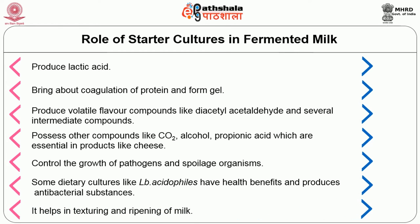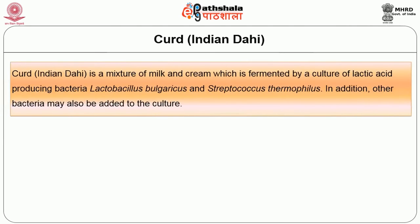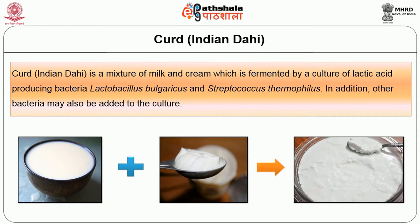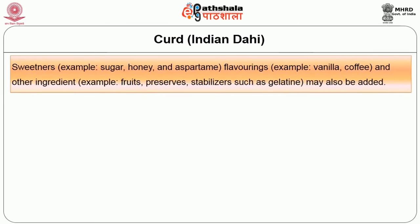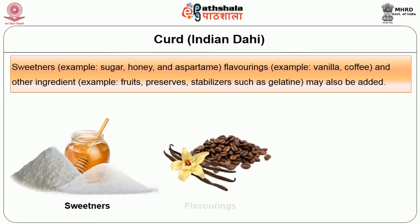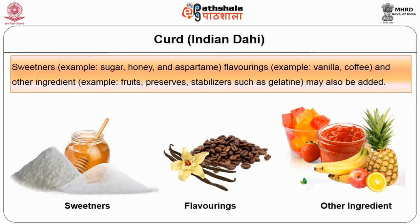Now let us go to the next milk product: curd, known as Indian dahi in Hindi. Curd is a mixture of milk and cream which is fermented by a culture of lactic acid-producing bacteria — Lactobacillus bulgaricus and Streptococcus thermophilus. In addition, other bacteria may also be added to the culture. Sweeteners such as sugar, honey and aspartame — aspartame being a sweetener beneficial for diabetes patients — as well as flavorings like vanilla and coffee, and other ingredients like fruits, preservatives and stabilizers such as gelatin, can also be added.